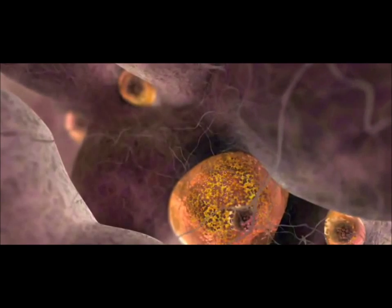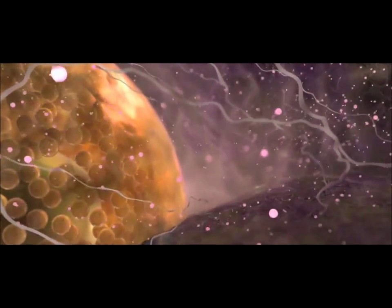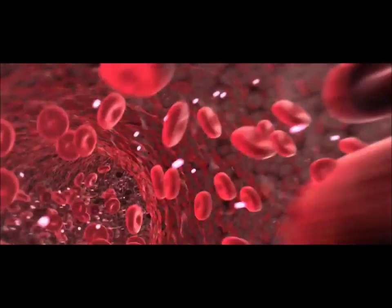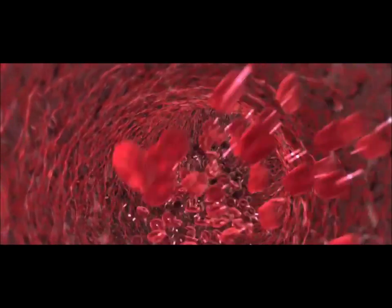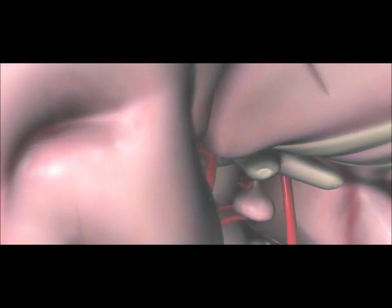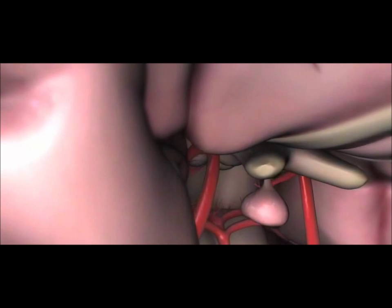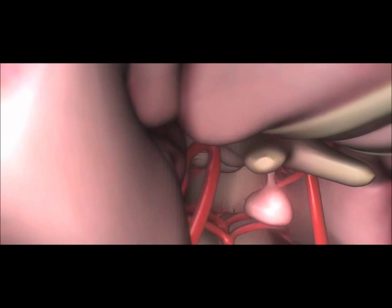Around day 12, the follicle secretes a large amount of estrogen into the bloodstream. When the estrogen reaches the hypothalamus and the pituitary gland in the brain, the anterior or front part of the pituitary gland releases a huge surge of luteinizing hormone into the bloodstream. Around day 14, luteinizing hormone causes the follicle to undergo a sudden growth spurt.